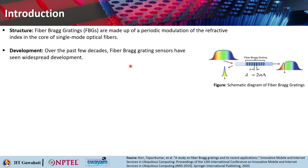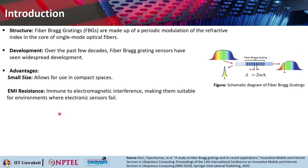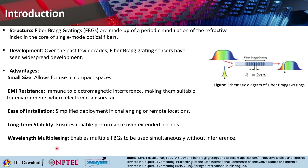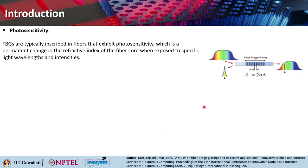Over the past few decades, fiber Bragg grating sensors have seen widespread development. They allow use in compact spaces and show electromagnetic interference (EMI) resistance, making them suitable for environments where electronic sensors would fail. They are easy to install and can be deployed in challenging and remote locations, ensuring reliable performance. Wavelength multiplexing enables multiple FBG sensors to be used simultaneously without interference, and FBGs exhibit photosensitivity — a permanent change in the refractive index of the fiber core when exposed to specific wavelengths and intensities.